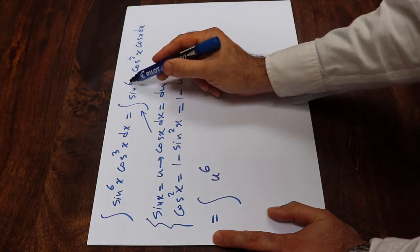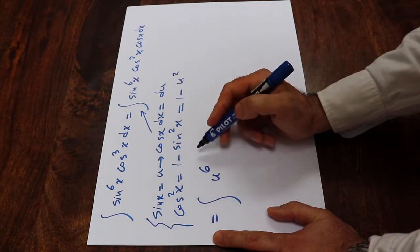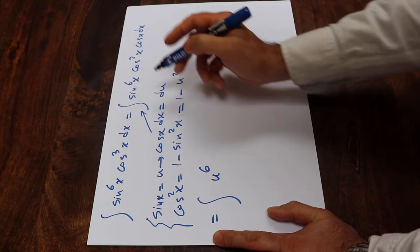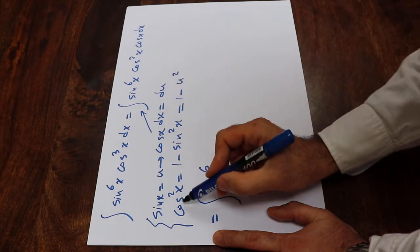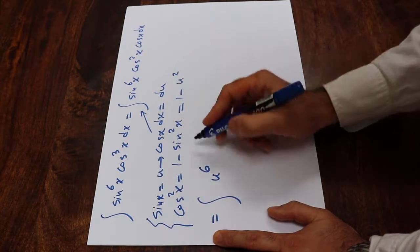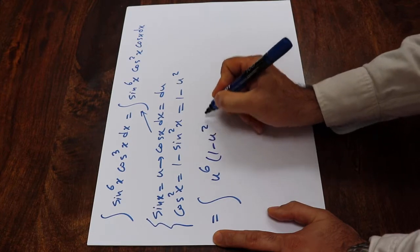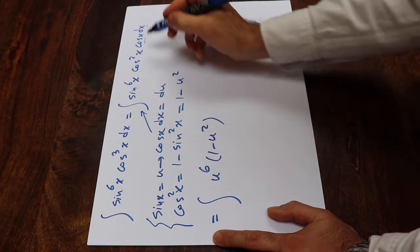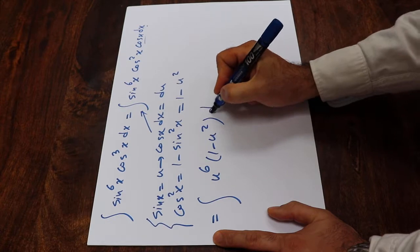Because sine x is u, therefore sine with the power of 6 will be u with the power of 6. Times, instead of cosine x, cosine 2x, here you see cosine 2x is equal to 1 minus u squared, so I write 1 minus u squared. And instead of cosine x dx I have du.